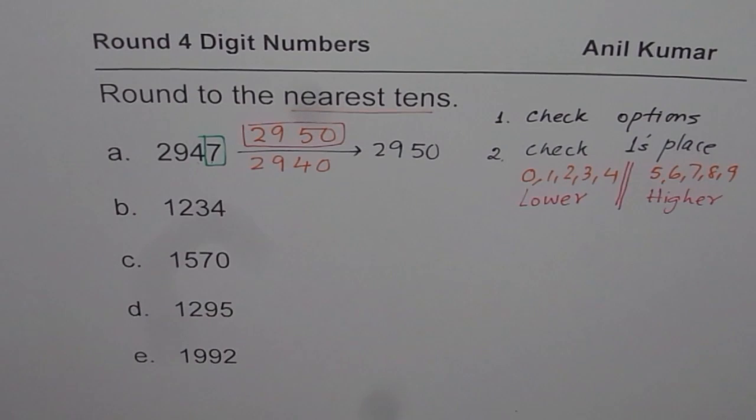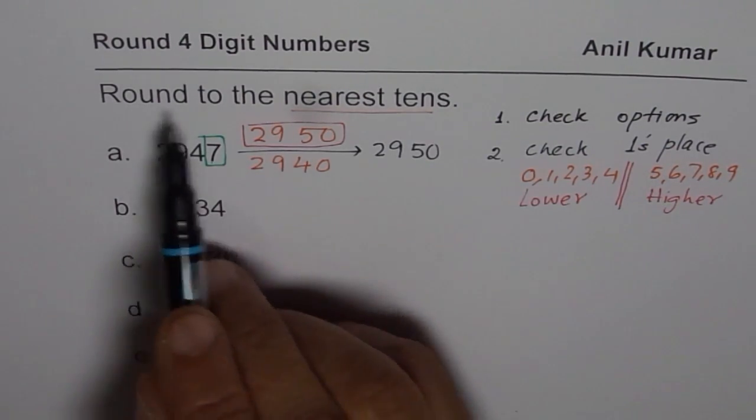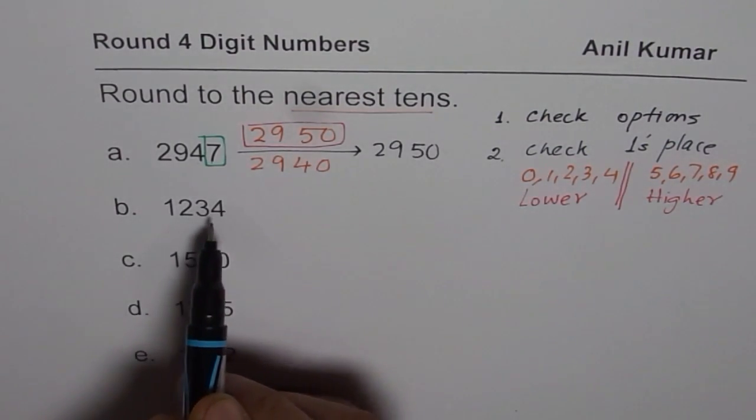Now, let's repeat this process four times, so that all of you can understand what we are trying to do. We are rounding to nearest tens. 1, 2, 3, 4 is the number.